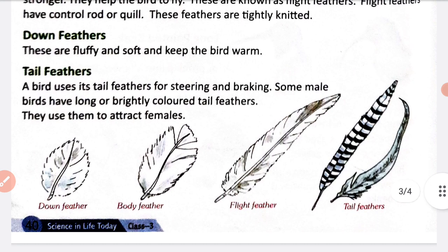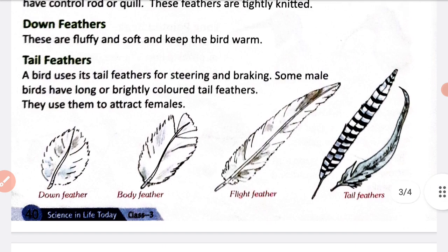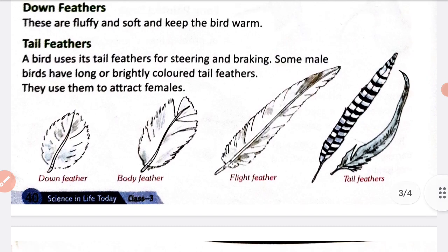The next type of feathers are down feathers. These are fluffy and soft and keep the bird warm. Down feathers bird ko warm rakhate hain - means garam rakhne mein uski help karte hain. Aur yeh feathers fluffy and soft hote hain.